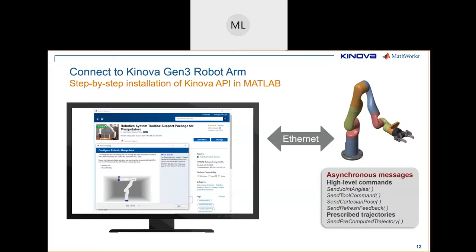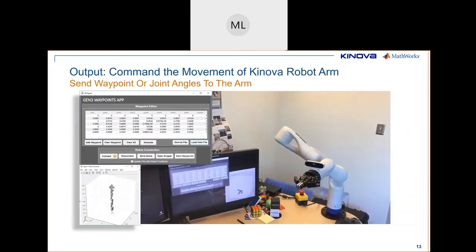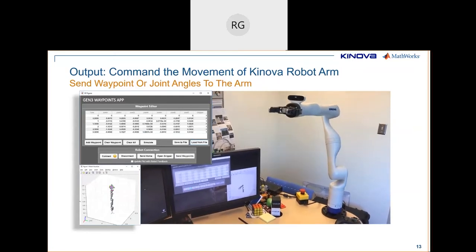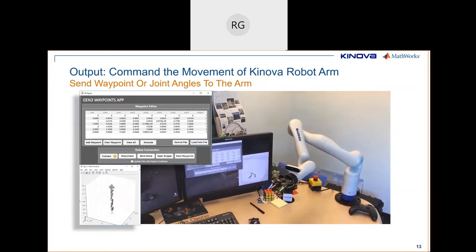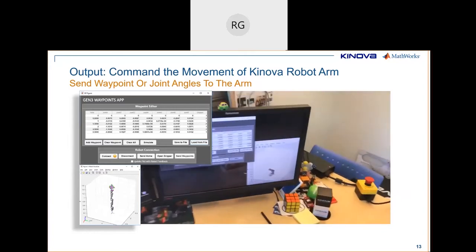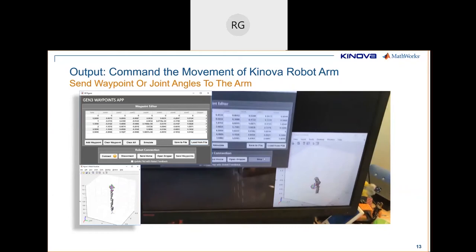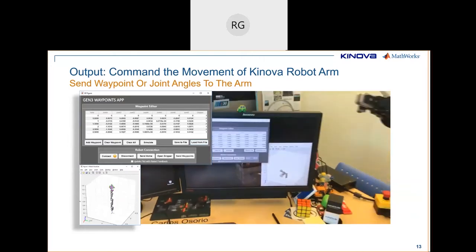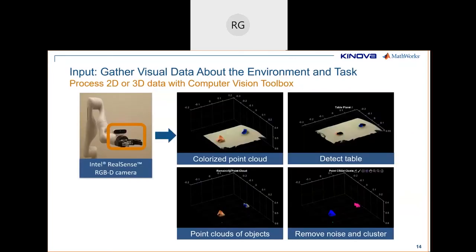With the API, we built a quick MATLAB app. It's easy to build apps in MATLAB — this one lets you connect to the robot, send it to home position, open the gripper, add waypoints for the robot to reach, and load waypoints from a file. For input, we use an image acquisition adapter Kinova built, which brings in both RGB data and depth information. What you see here is a point cloud extracted from the camera.